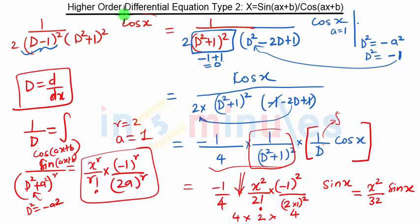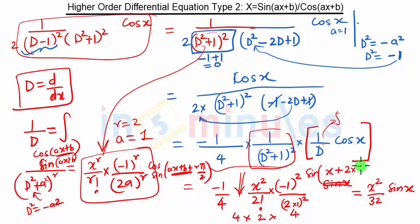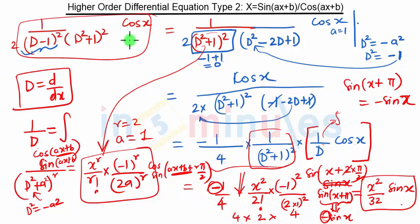In this problem we see a few important things: when we substitute D² equal to −1 in this part, this part is creating a problem, so this part is given by that solution. We also have the formula cos or sin of (ax + b + r·π/2). Similarly here, we have sin of x plus r·π/2 with r = 2, giving sin(x + π). Now sin(x + π) equals minus sin x. So this minus sin x and the other minus sin cancel to become plus, and we remain with x²/32 · sin x.